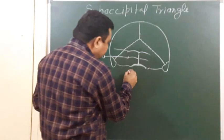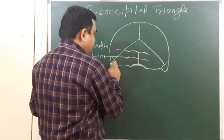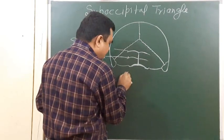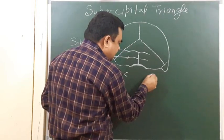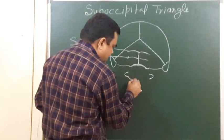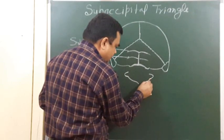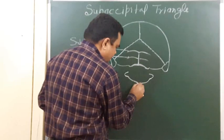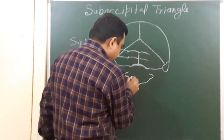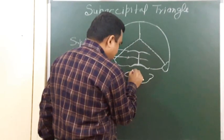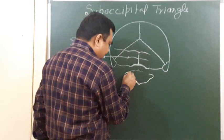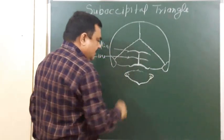Here is the posterior line. Here is the position of the transverse process of the first cervical vertebra, that is the atlas. This is the posterior arch of the atlas. Here is the anterior arch and foramen transversum.